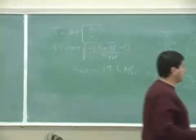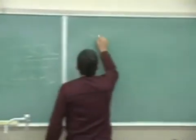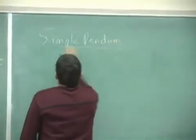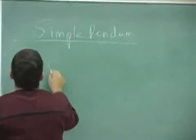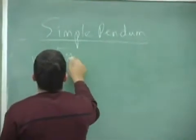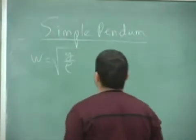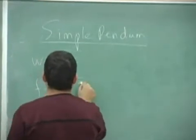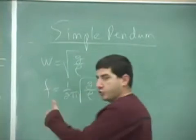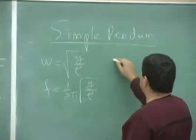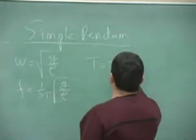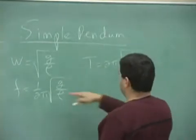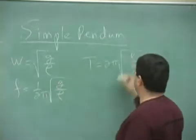The formula for the simple pendulum is omega equals square root of g over l. The f is 1 over 2π square root of g over l. Remember, they're all connected. And then the period is 2π square root of l over g. So the period is the inverse of the frequency.